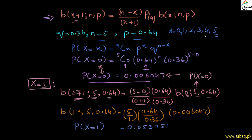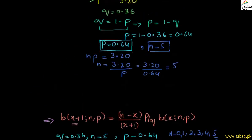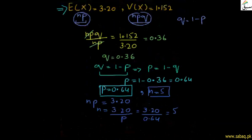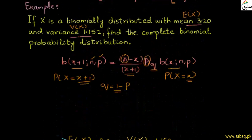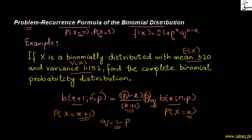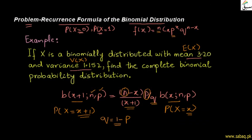We have now computed P(X = 1). The remaining probabilities for x equal to 2, 3, 4, and 5 will be completed in the next video. In summary, when the mean and variance are given, we first extract n and p, then use the recurrence formula to build the complete binomial probability distribution.